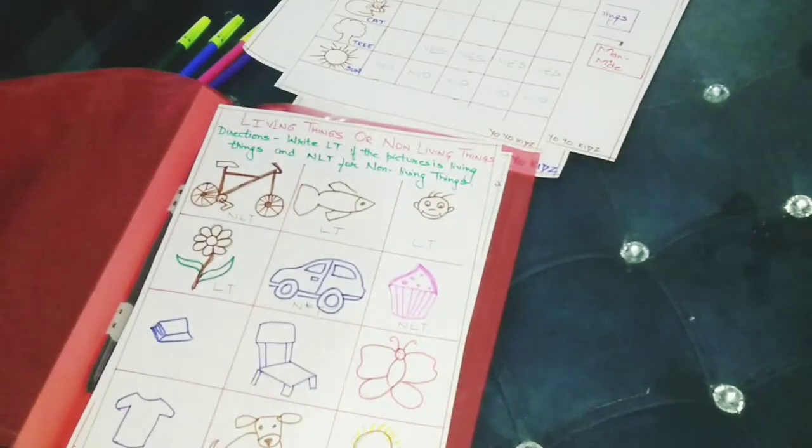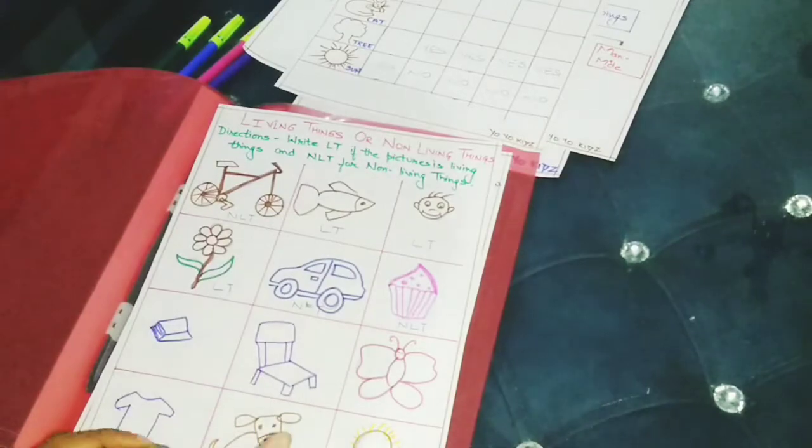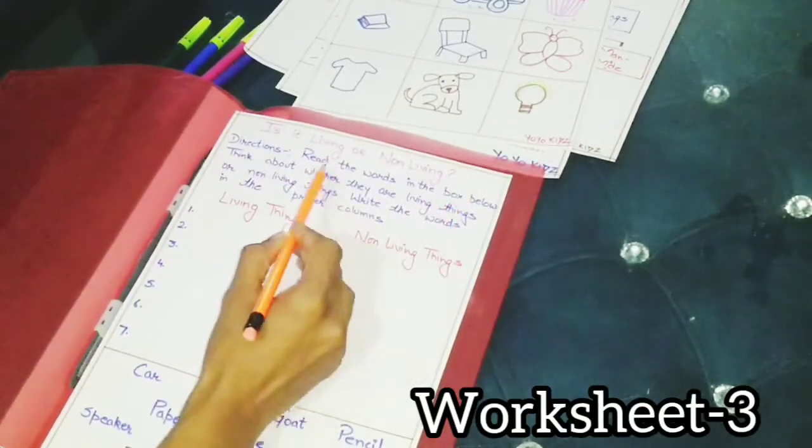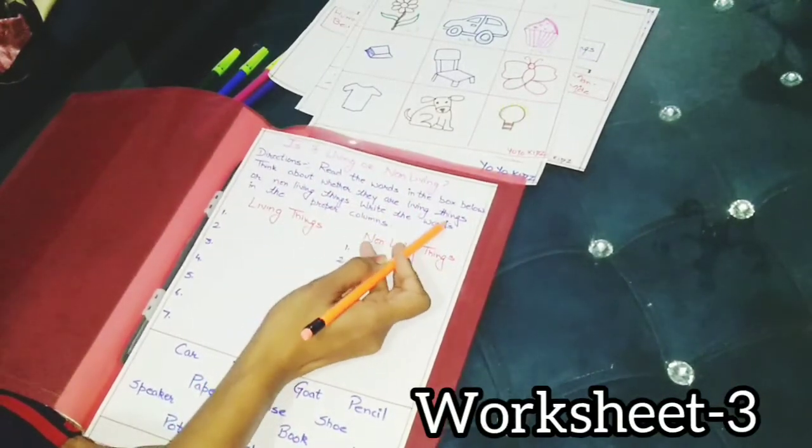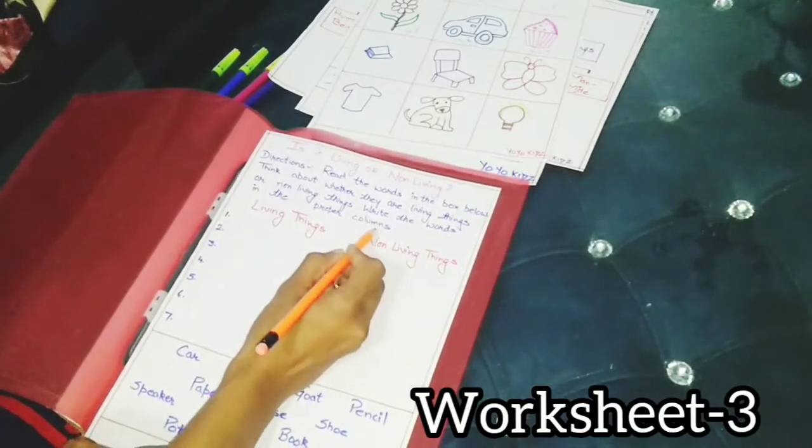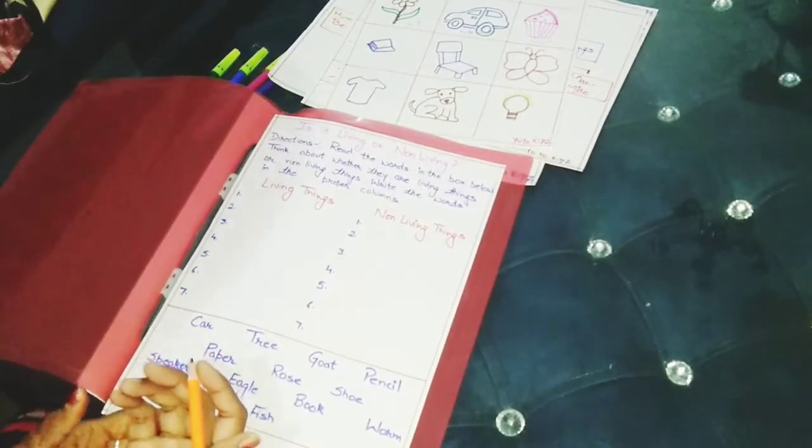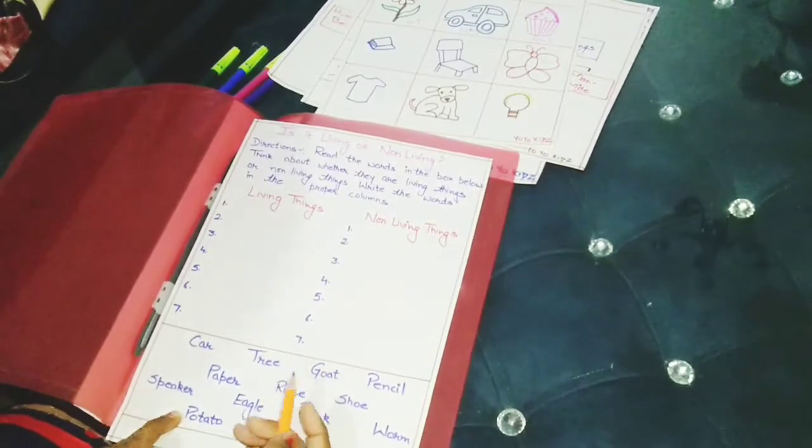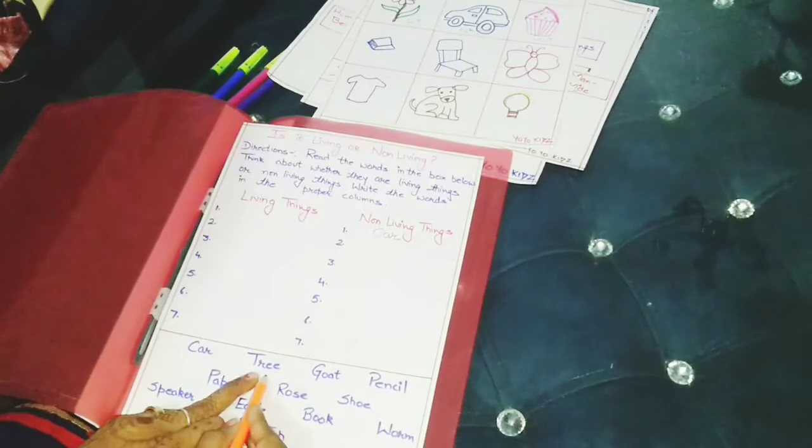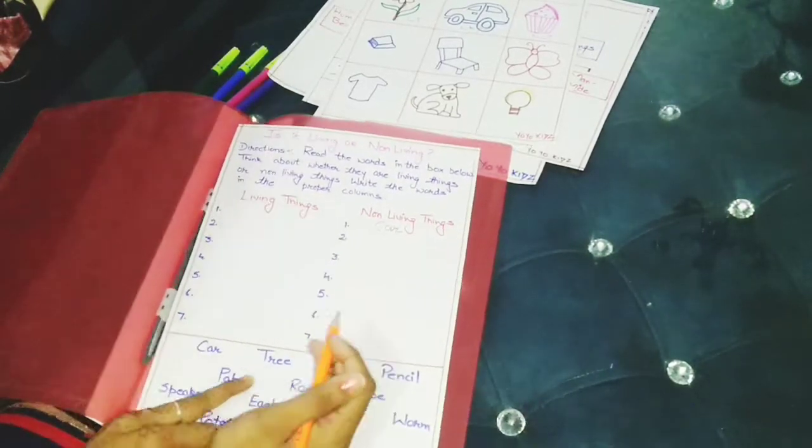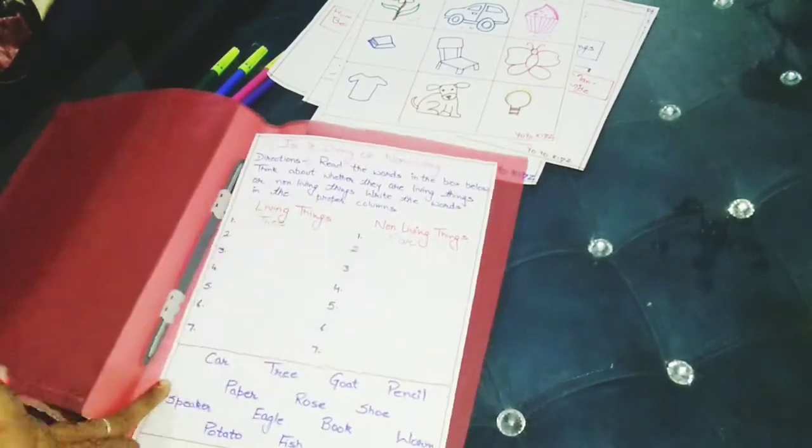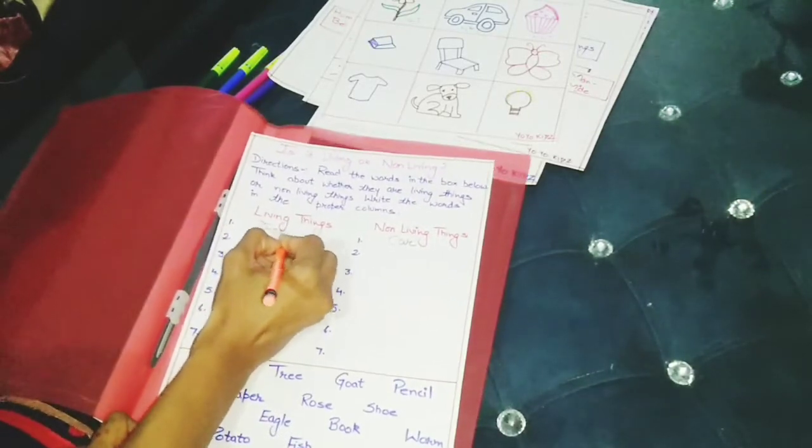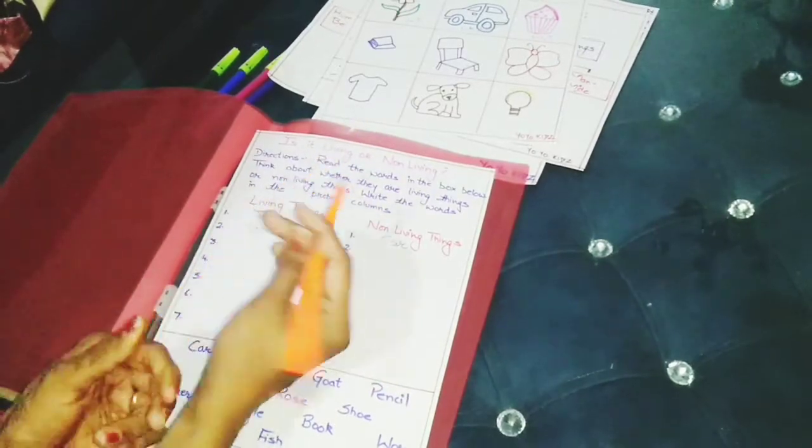Is it living or non-living? Read the words in the box below. Think about whether they are living things or non-living things. Write the words in the proper column. Now you can see some words here. You can ask these words to the kids. You can ask them if they are living or non-living things. Like car. Car is living or non-living? It's a non-living thing. So here you can see car. Next is a tree. Tree is a living thing or non-living? Tree is a living thing. Very good. So we will write it here. Next is goat. Goat is an animal. It is a living thing. Pencil. Can a pencil grow or move? No. So it is a non-living thing.